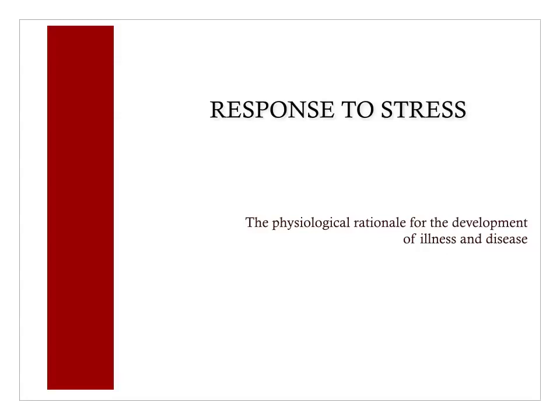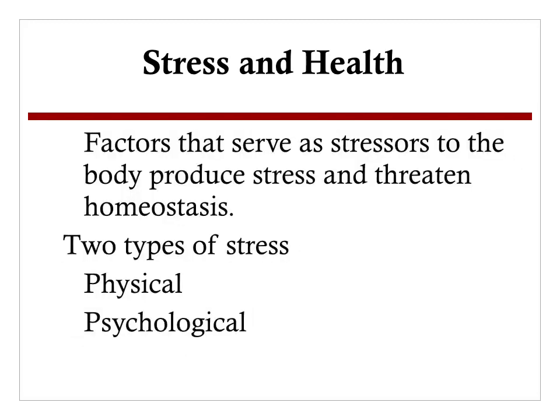Let's talk about the response of the endocrine and neuroendocrine system to stresses. This gives us a physiological rationale for how illnesses and disease end up developing, because it's not really being exposed to a distinct pathogen as it is the culmination of endocrine and neurological changes. When we talk about this, we have to talk about the fact that stresses lead to health issues. We're talking about two distinct types: physical stress and psychological stress.